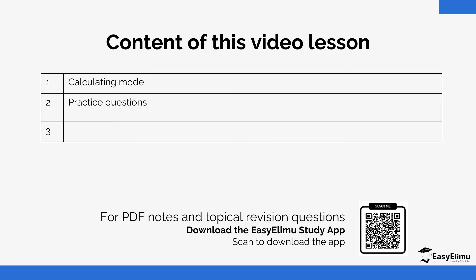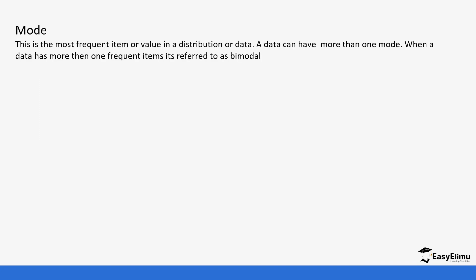So what is mode? Mode is the most frequent item or value in a distribution of data. A dataset can have more than one mode, in which case we say it is bimodal.